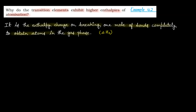Enthalpy of atomization clear। अब बताना है कि transition elements की enthalpy of atomization high क्यों होती है। ऐसा इसलिए क्योंकि जो transition elements होते हैं, उनके पास होते हैं number of unpaired electrons। उनके पास बहुत सारे unpaired electrons present हैं। और due to these unpaired electrons, वो बनाते हैं metal-metal bonds, या कह सकते हैं कि उनमें होती है metallic bonding।